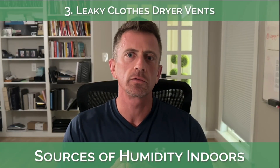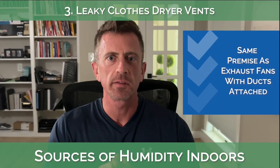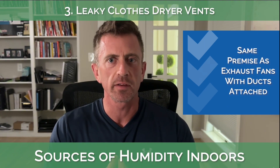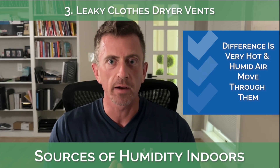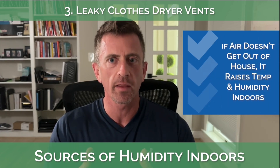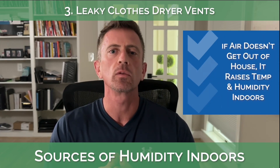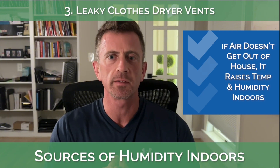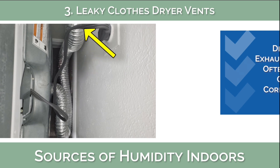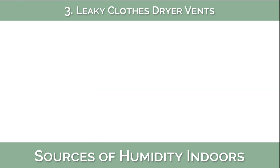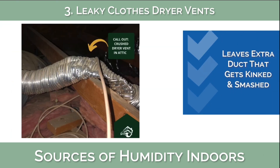Number three: leaky clothes dryer vents. The same premise as the exhaust fan applies to clothes dryer vents, but the difference here is there is very hot and humid air leaving the clothes dryer, and if it doesn't make its way all the way out of the house, it can very quickly raise the temperature and relative humidity inside your home. More often than not, exhaust ducts connected to clothes dryers are not cut correctly to fit the space between the clothes dryer and the connection in the wall where the air is supposed to go out, which leaves a lot of extra flexible ductwork that ends up getting kinked or smashed behind the dryer.